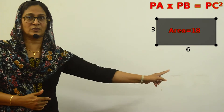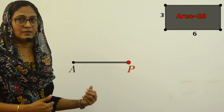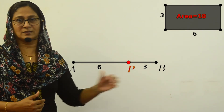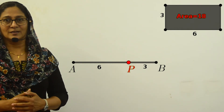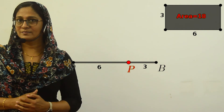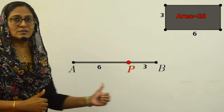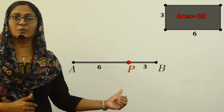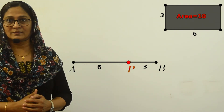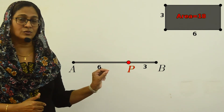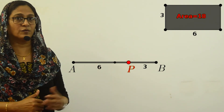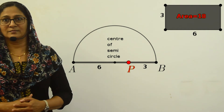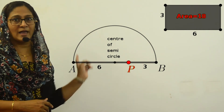First, we are going to draw the diametrical chord with 6 centimeters and 3 centimeters. So I have the points A and B on the two ends of the diameter, and P is the point of intersection. Now we need our semicircle. The total length of the diameter is 9 centimeters. We need the midpoint at 4.5 centimeters. I mark a point at 4.5 centimeters and using a compass I complete the semicircle. Now I have my diametrical chord and the semicircle.